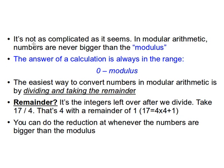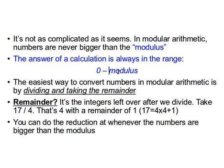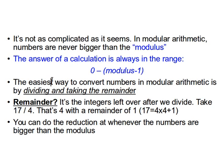Just to recap — it's not so complicated, it's just a matter of getting your head around it. In modular arithmetic, numbers are never bigger than the modulus. The result of a calculation is always in the range between 0 and modulus minus 1.